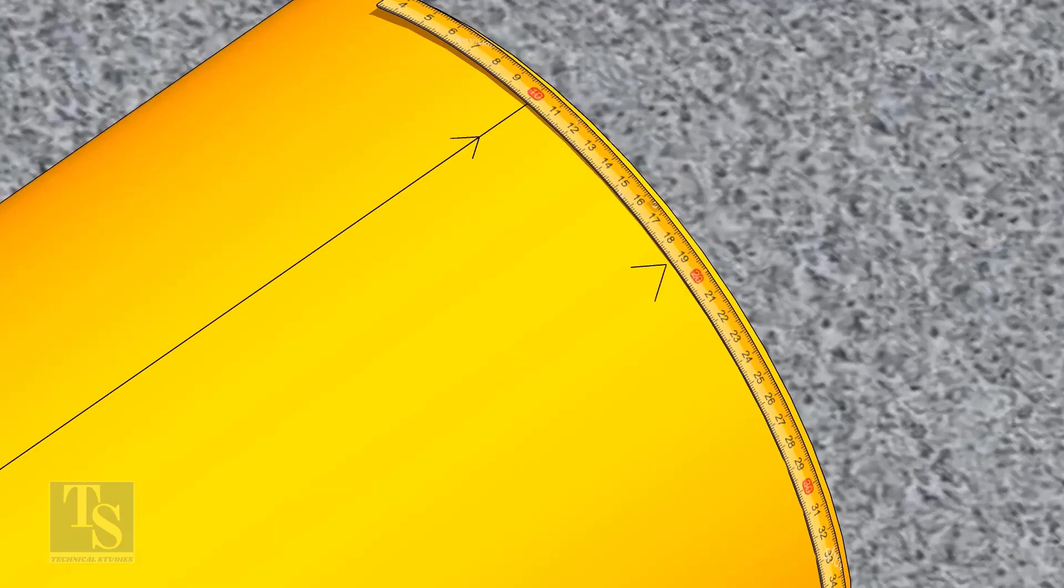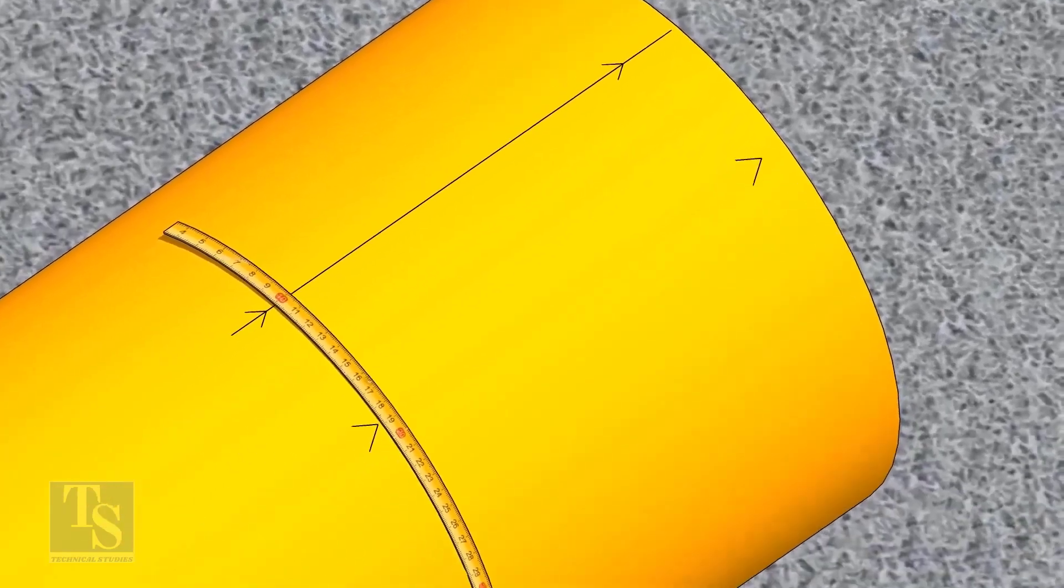Since we are rotating the flange 25 degrees anticlockwise, mark 88.5 mm anticlockwise on the pipe, as shown.